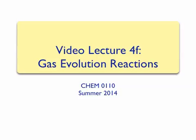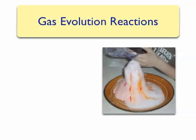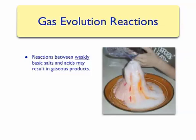There are certain acid-base reactions that will result in a gas-based product, which can be observed bubbling out of the solution. These acid-base reactions occur between any acid and a salt that can be considered weakly basic. For now we won't worry about what makes the salt weakly basic. We will only study three classifications of gas evolution reactions.